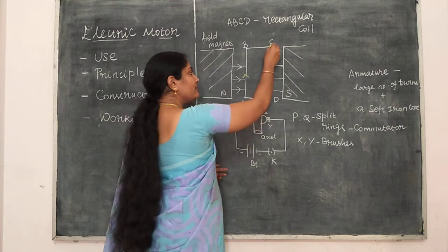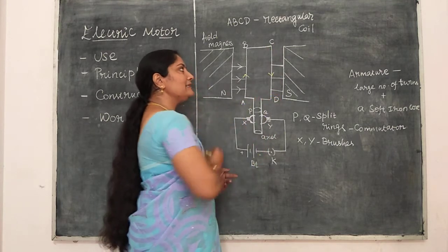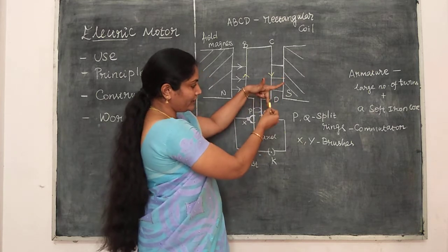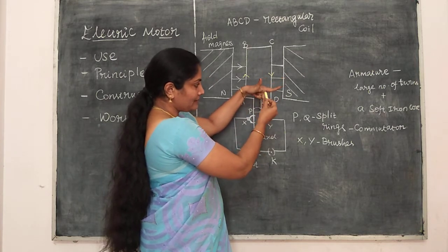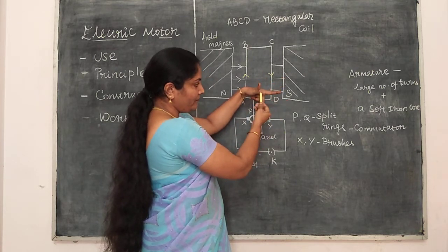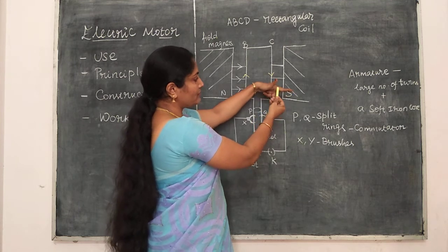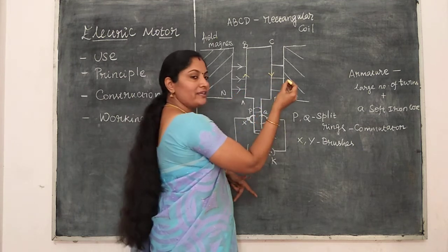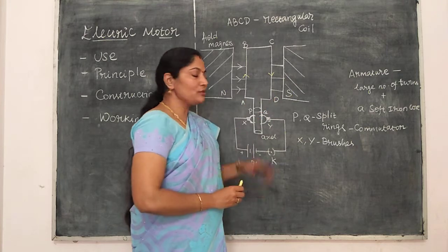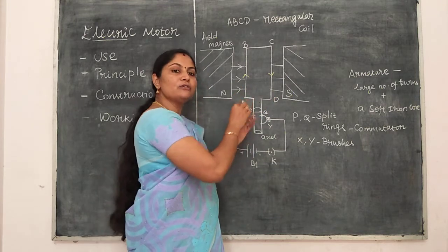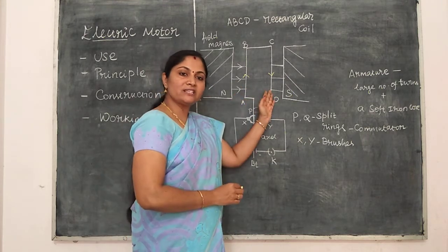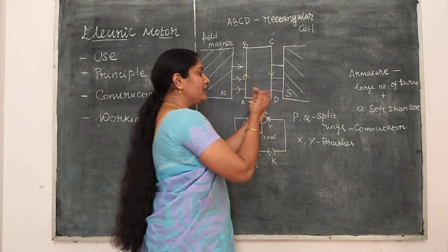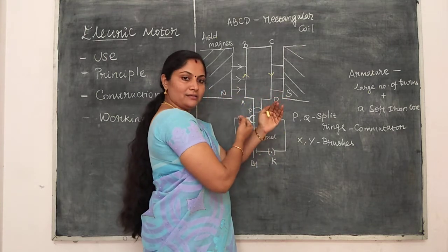At the same time, what is the force experienced by arm CD? Here, this is the direction of current, this is the direction of the magnetic field, and this is the direction of force experienced by this arm. So arm AB experiences an inward force, and arm CD experiences an outward force. So the coil will rotate.